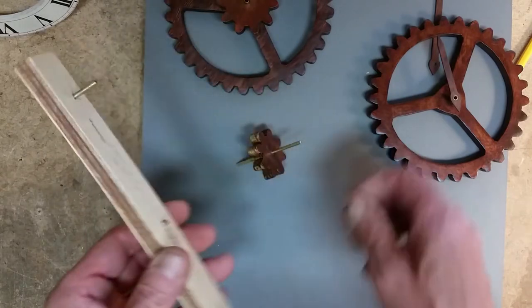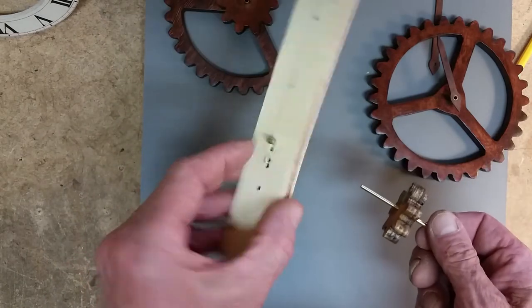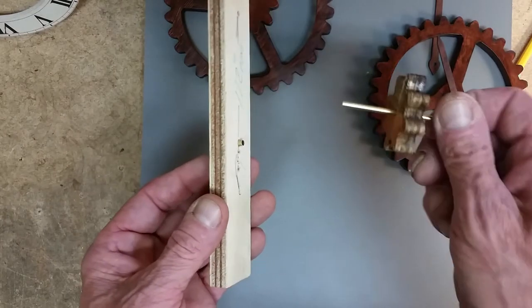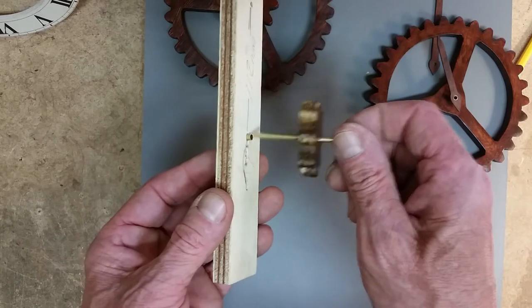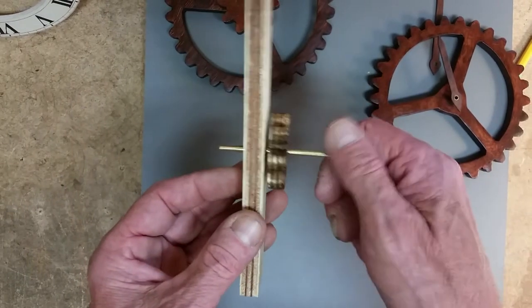This one here is a 5/32nds of an inch brass tubing and it's convenient because a 1/8 inch brass rod goes right inside there and it makes for a nice bearing.